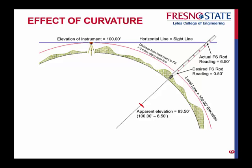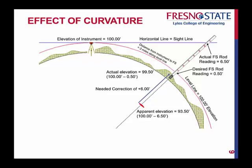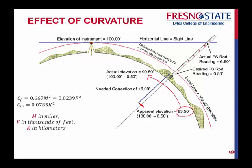Right there is our desired foresight rod reading, and that's what we're trying to get to, but we can't because that's not what our eyes do. In reality, we have an actual elevation of 100 minus 0.5, giving 99.50 feet. So the question is how are we going to fix that? If I had an elevation calculated at 93.50, I need to make some sort of correction to get back up to 99.50. That's a difference — I'm correcting my apparent elevation by a positive 6 feet to get up to the proper elevation. That's how we correct for this, and I've got formulas we can use.